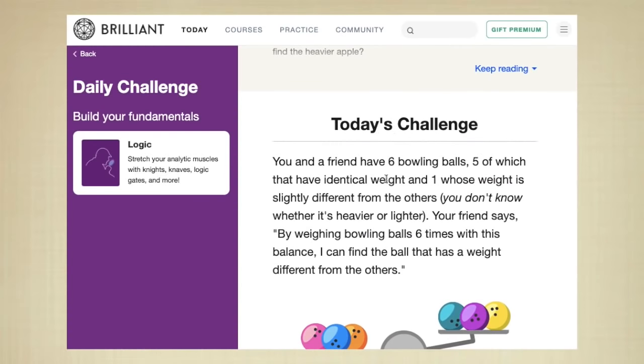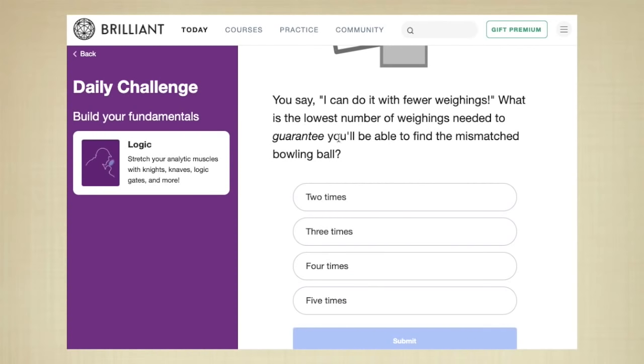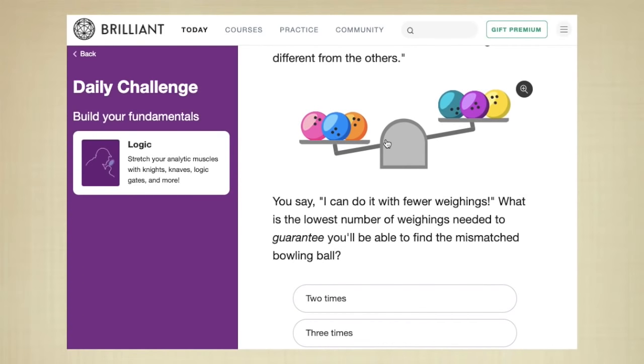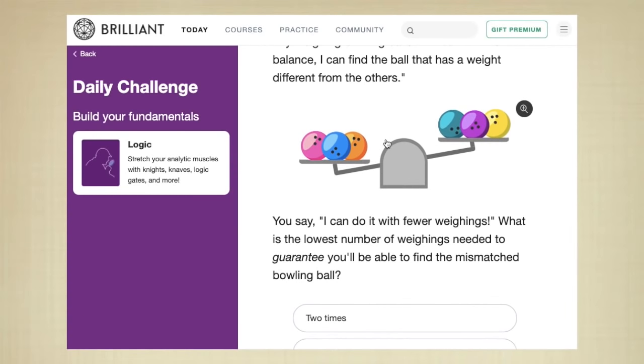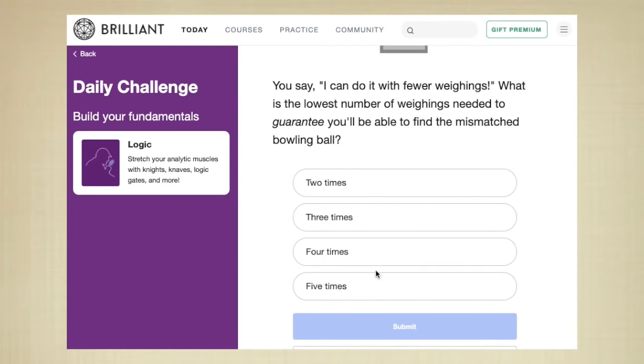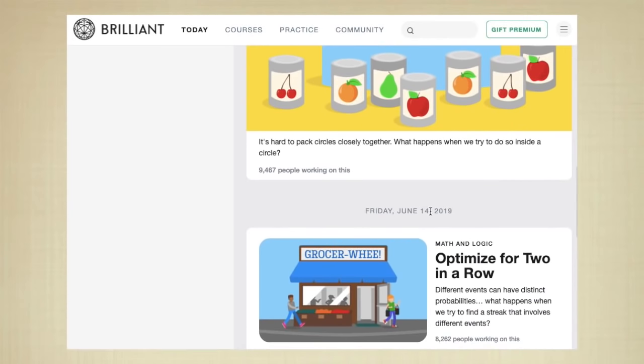So you and a friend have 6 bowling balls. 5 of them are identical in weight, and one of which is either heavier or lighter. We don't know. What's the lowest number that you need to figure out, right? To guarantee to figure out the different bowling ball. And if you guys come here, you can sign up for a free account, and you can keep track of your progress.